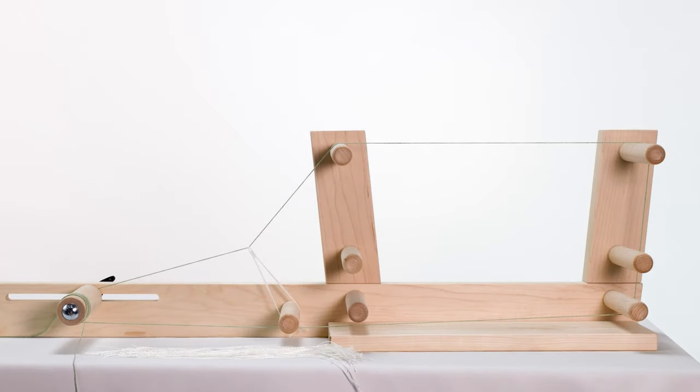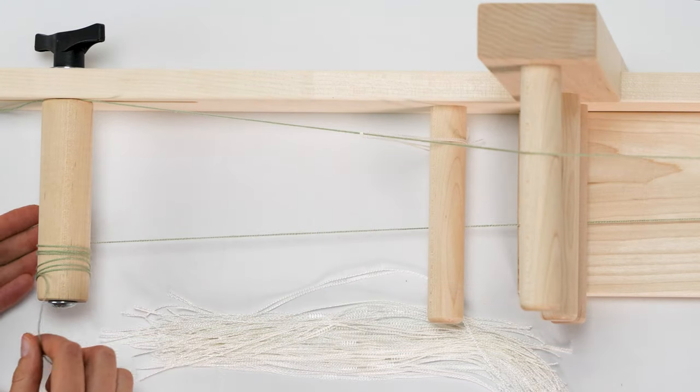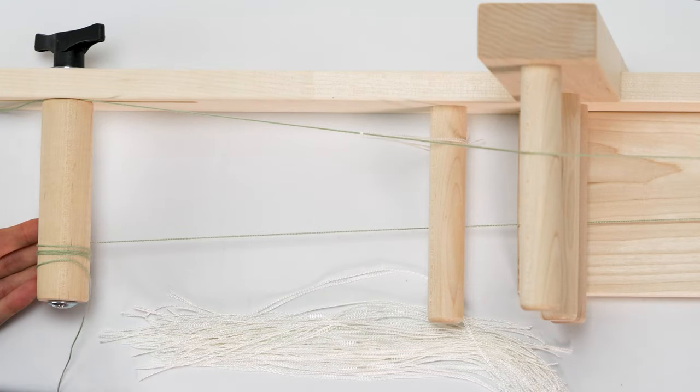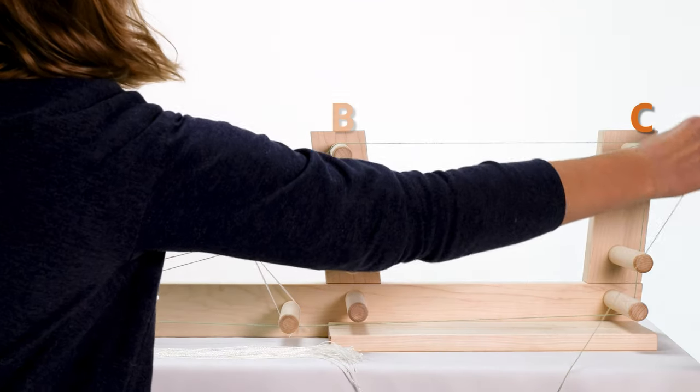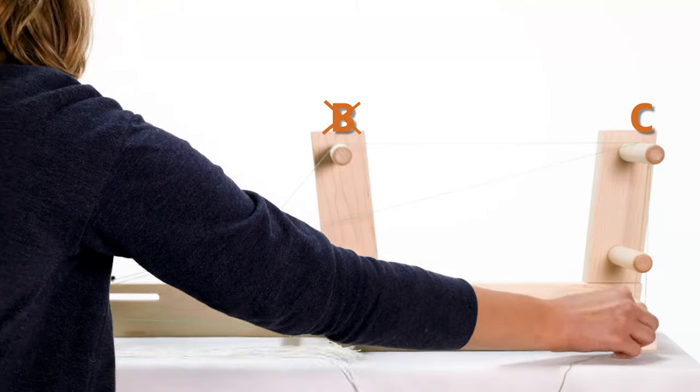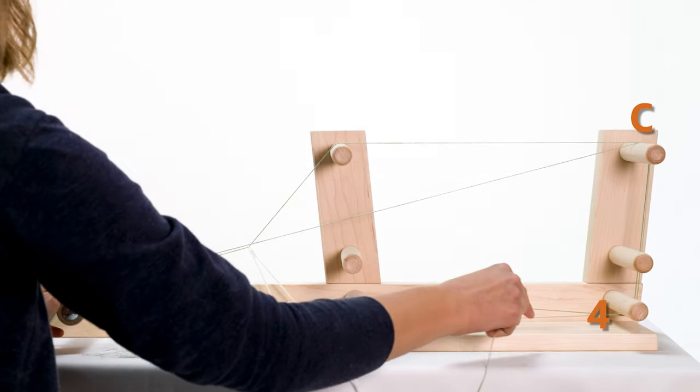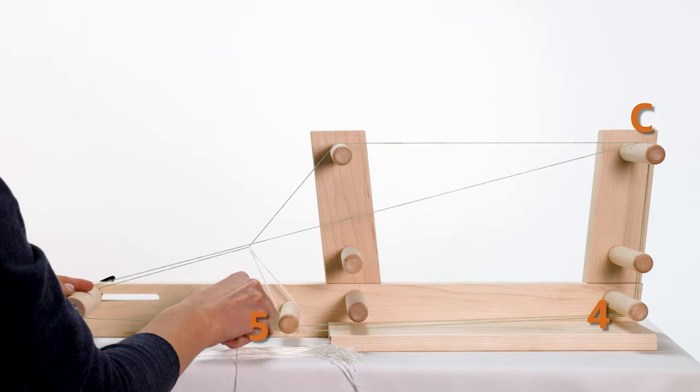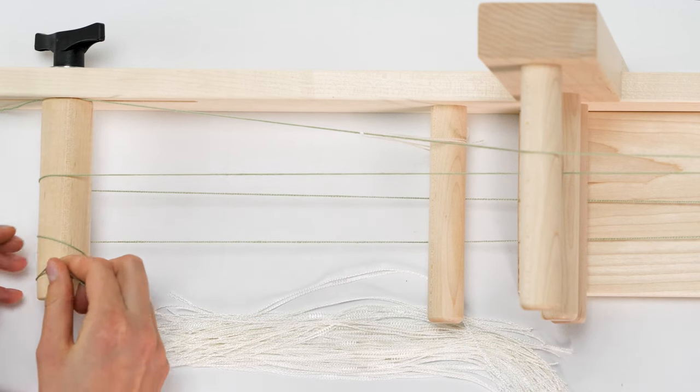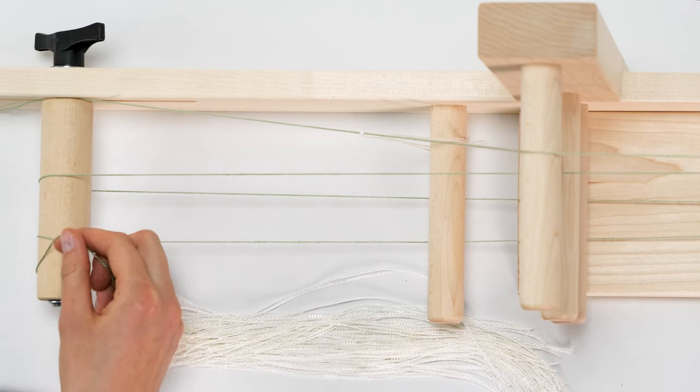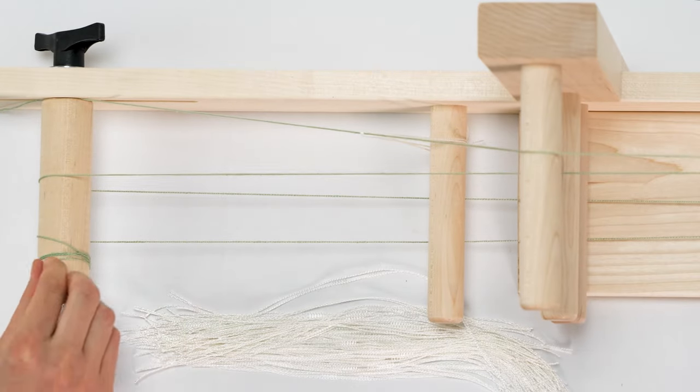Our next thread will be open, so we will not place a heddle on it. The path we will make with the thread is slightly different. To do this, unwrap the thread from the tension peg and bring it directly to peg C. Do not place it over peg B. Then bring the thread around peg 4, under peg 5, and back to peg A. This is all we will do for the second thread.